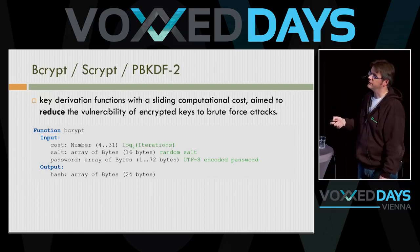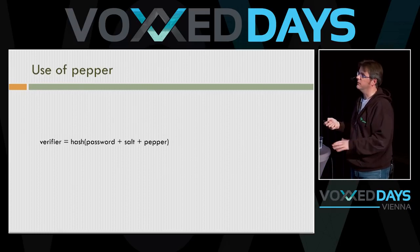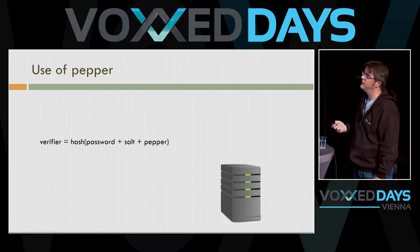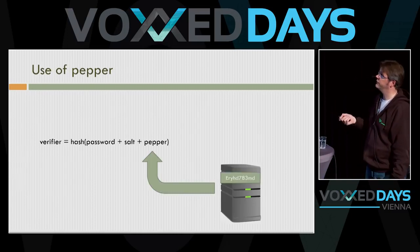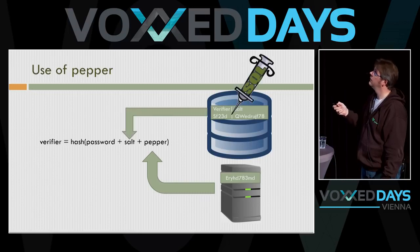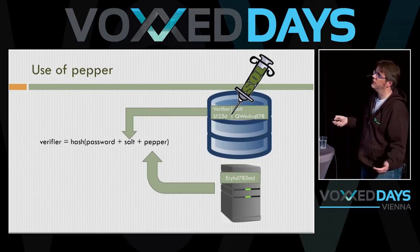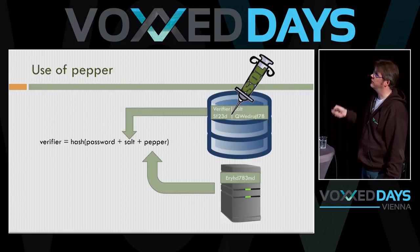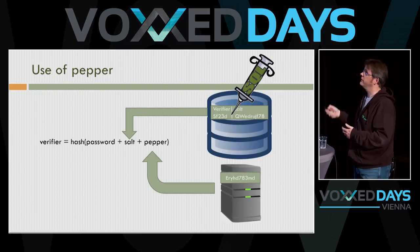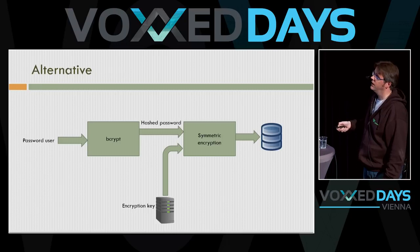The best approach at the moment is bcrypt, scrypt, or PBKDF2 — password derivation functions with a configurable computational cost. It takes a long time to compute the hash, and you can set the cost parameter. You put in the cost, the salt, and the password, and store the resulting hash. When the user logs in you do exactly the same — brute forcing is much more difficult and time-consuming. There's also the concept of a 'pepper': a key stored on the server that's separate from the database. If the database is SQL-injected, the attacker has the hash and salt but is still missing the pepper, making brute force significantly harder.